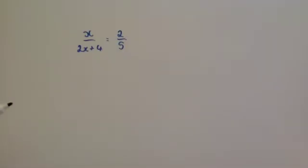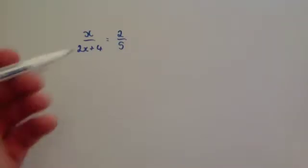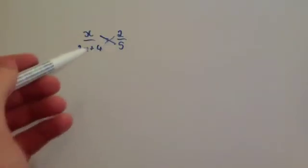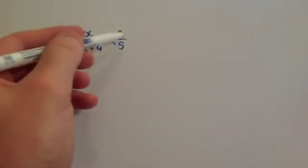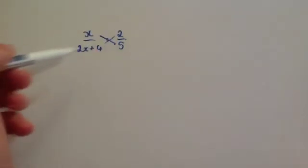Another technique is what they call cross-multiplying, and that's where you times the x by the 5 and the 2 by the 2x plus 4. In other words, you multiply the numerator of this one by the denominator of this one, and you put it equal to the other numerator times the other denominator.